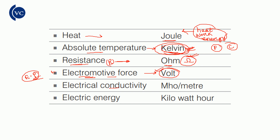Electrical conductivity — the unit is mho (which is Ohm spelled backwards, the inverse of resistance). The unit of electrical conductivity is 1/Ohm, also called mho, or Siemens per meter.